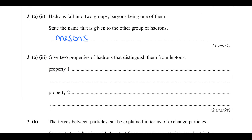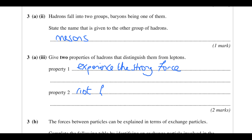Give two properties of hadrons that distinguish them from leptons. The first is that they experience the strong interaction. The other is that they're not a fundamental particle, because they're made of quarks — whereas leptons are fundamental, hadrons are not.